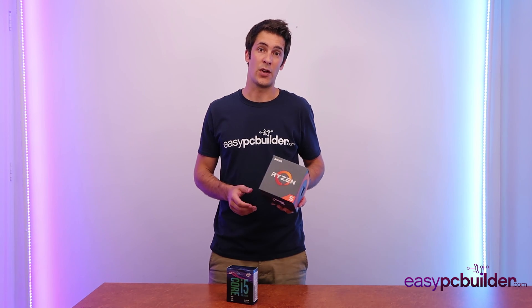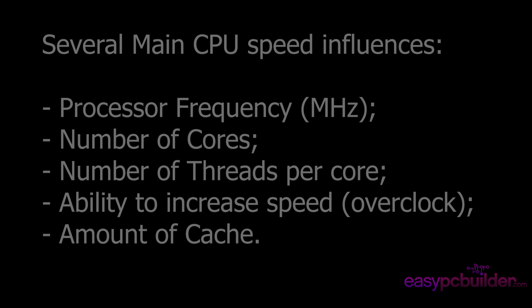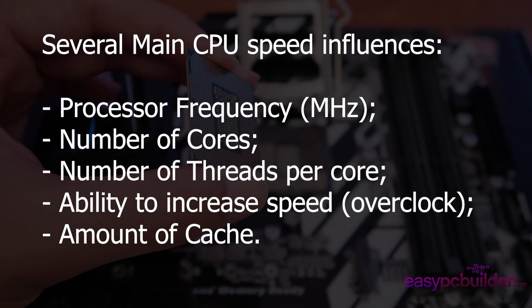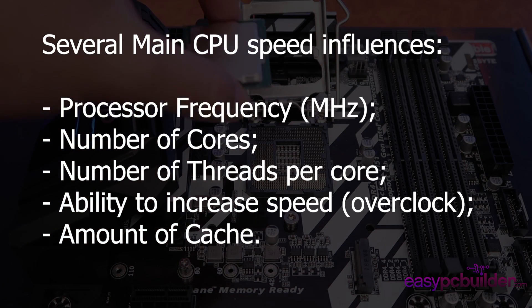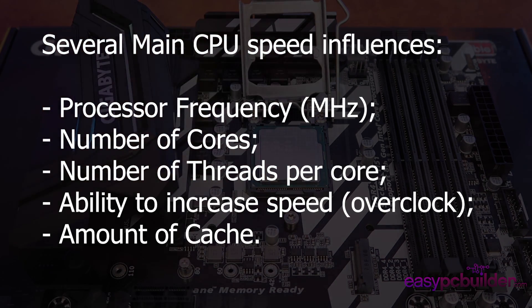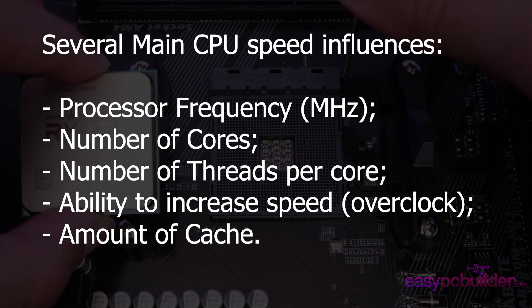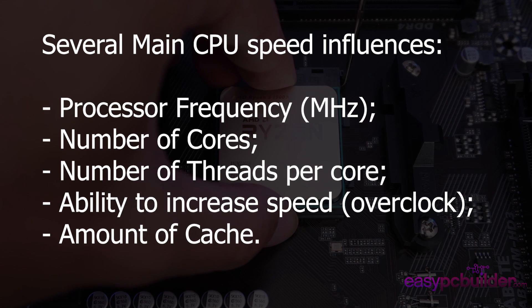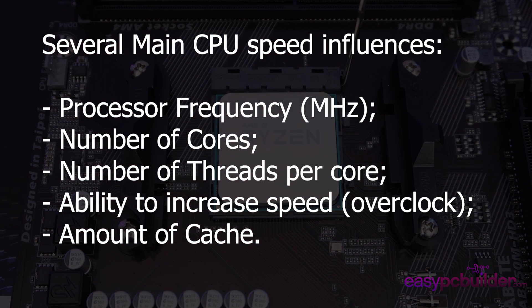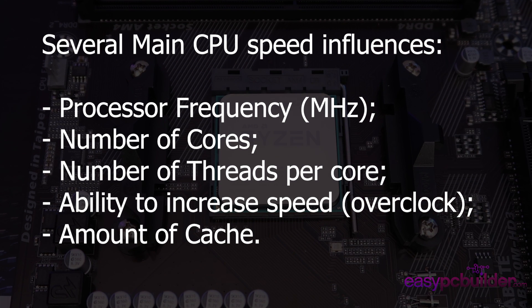Like motherboards, there are varying different types of CPUs for the purpose required. Generally the biggest change is their overall output speed. The several main influences are: the processor frequency, which roughly translates to the overall speed; the number of cores, which was previously generally 4 but now it's 6 to 8 in higher end gaming CPUs; the number of threads per core, where multiple threads allow for parallel execution on each CPU core — lower end CPUs don't generally have this functionality; the ability to increase speed or overclock; and other items like the amount of cache available to each CPU core.